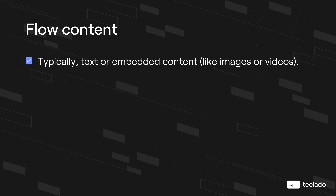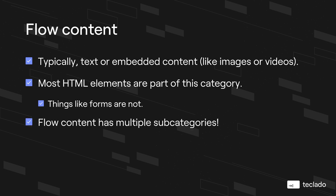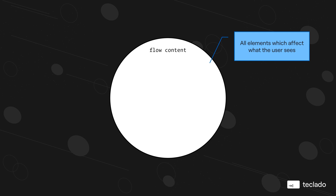The first content type that we're going to talk about is flow content. Typically these elements are text or embedded content, or they contain that directly underneath them, like images or videos or just plain text. Most HTML elements are part of the category of flow content. Flow content also has multiple subcategories, and elements can be grouped into those as well. This group is basically all the elements that affect what the user sees.